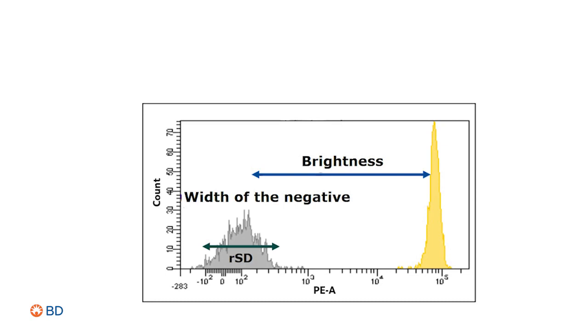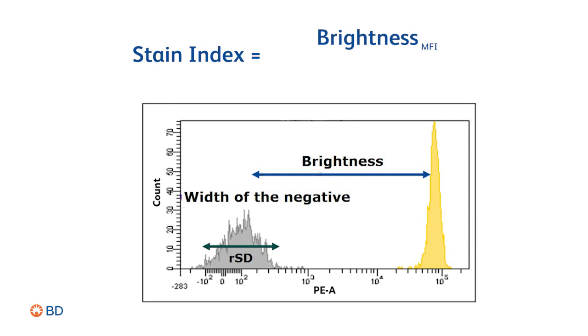The standard metric for measuring fluorochrome resolution is the stain index, which is the difference in fluorescence intensity of the positive and negative populations divided by two times the robust standard deviation of the negative population.